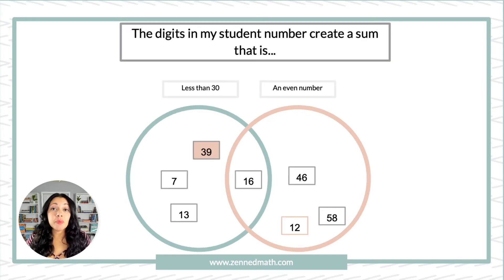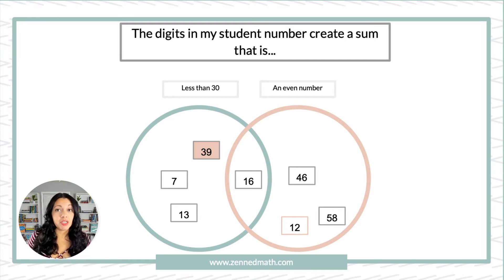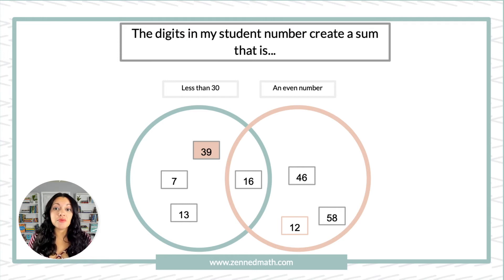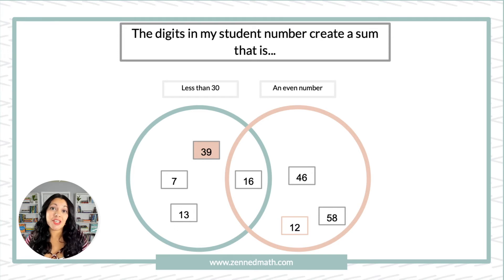Here's an example of what students can do. I see 7, 13 — less than 30 but not even, so they don't go in the middle. On the even side I have 46 and 58 — those are even numbers, but not less than 30, so that's where those go. In the middle I have 16, which is less than 30 and also an even number.